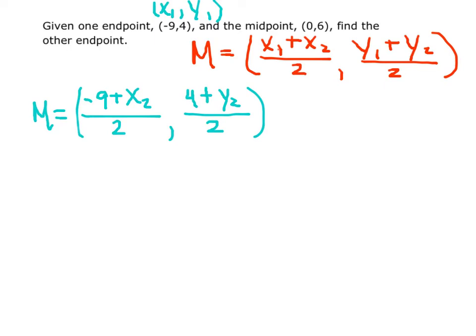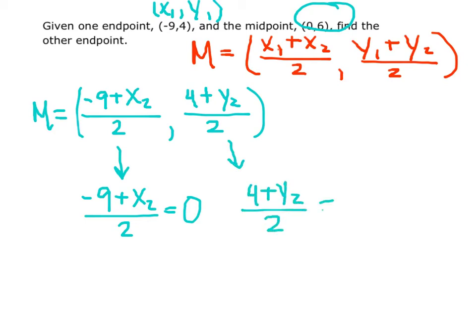Now we know that this first coordinate is the x coordinate of the midpoint. Since our midpoint they tell us is 0, 6, we can let negative 9 plus x sub 2 divided by 2 equal to 0, and we can let 4 plus y sub 2 divided by 2 equaling 6.